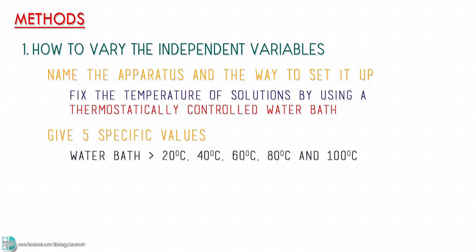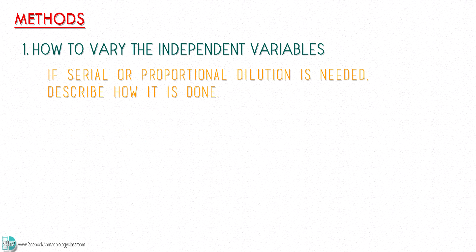For example, set up water baths at 20, 40, 60, 80 and 100 degrees Celsius. Make sure the gaps between the values are constant and the range of the values is logical. If you need to carry out serial dilution or proportional dilution to vary this variable, describe how it is done.